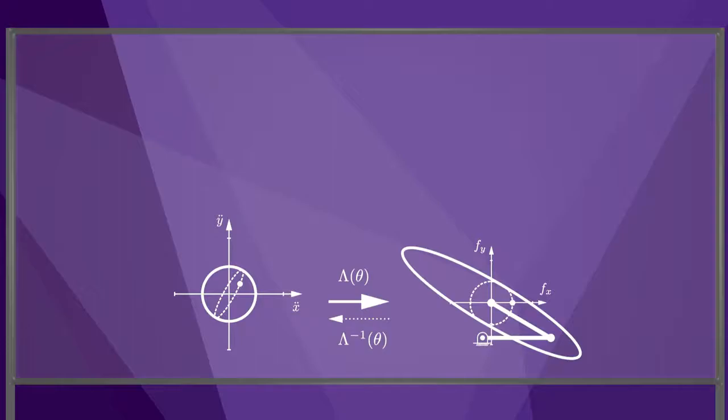From this example, we learned two things. First, the magnitude of the end effector mass depends on the direction of acceleration. Second, in general, the directions of the end effector acceleration and force are not aligned.